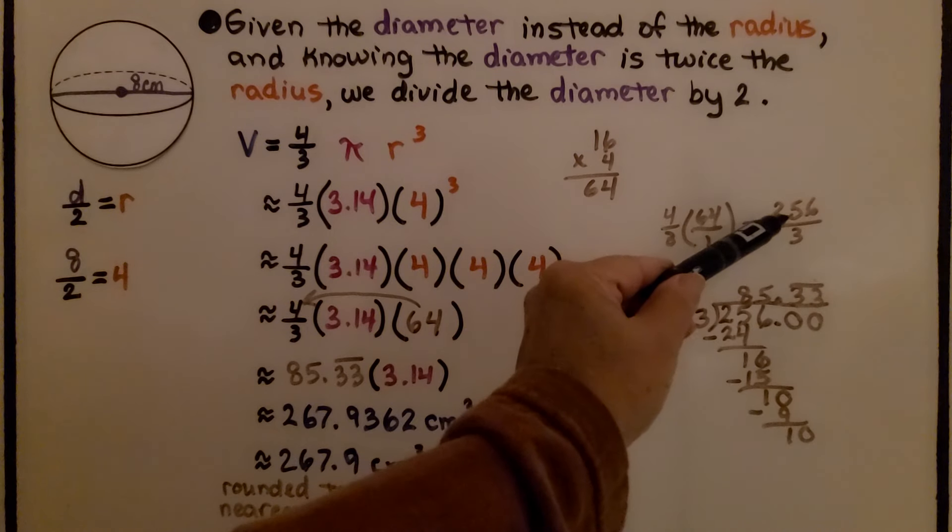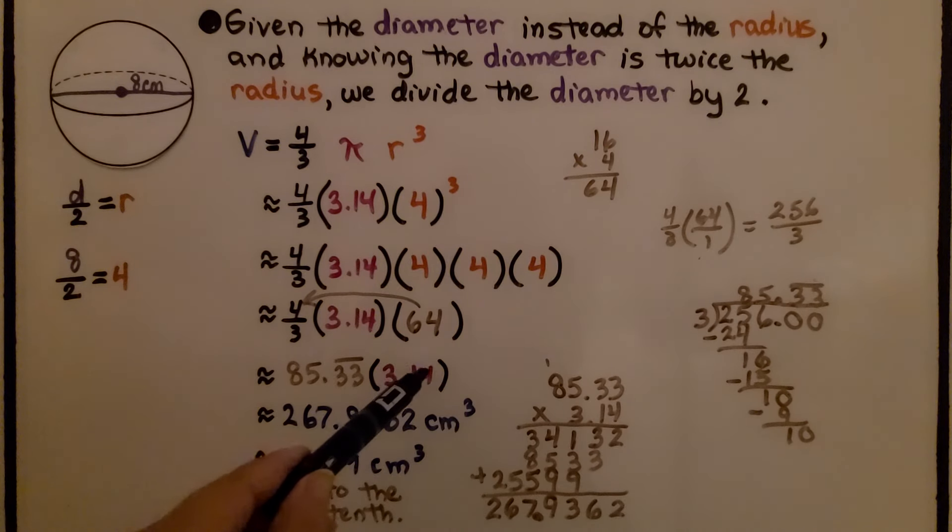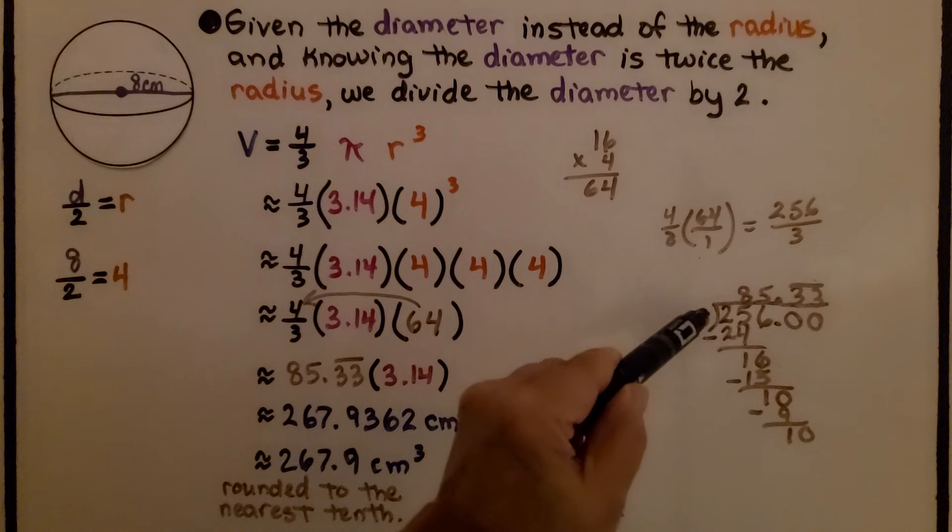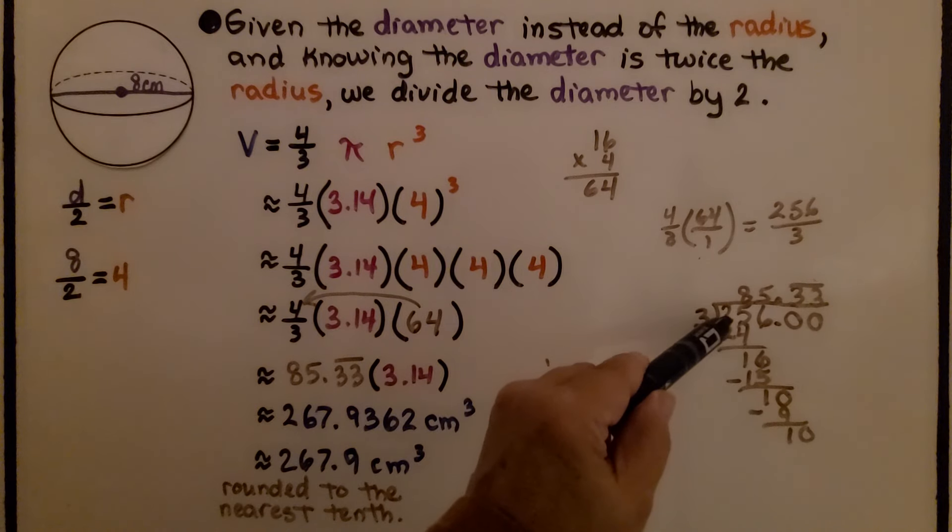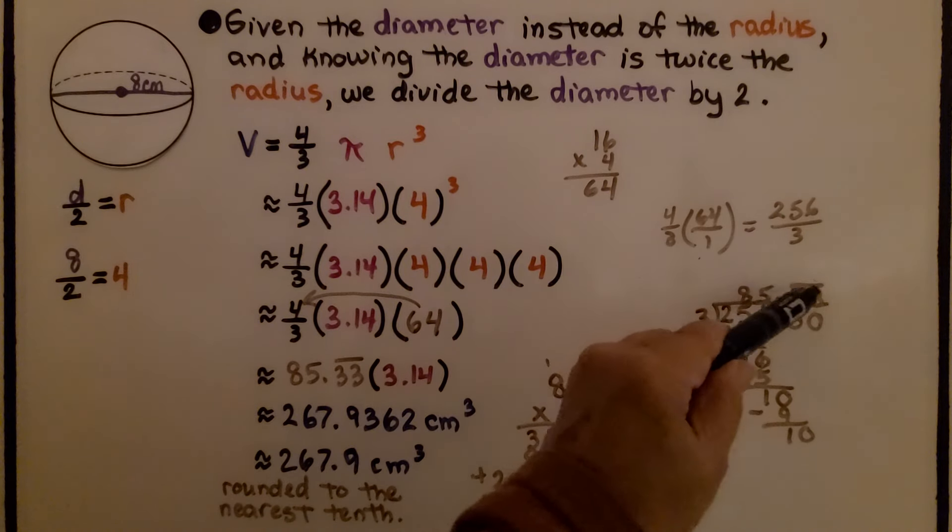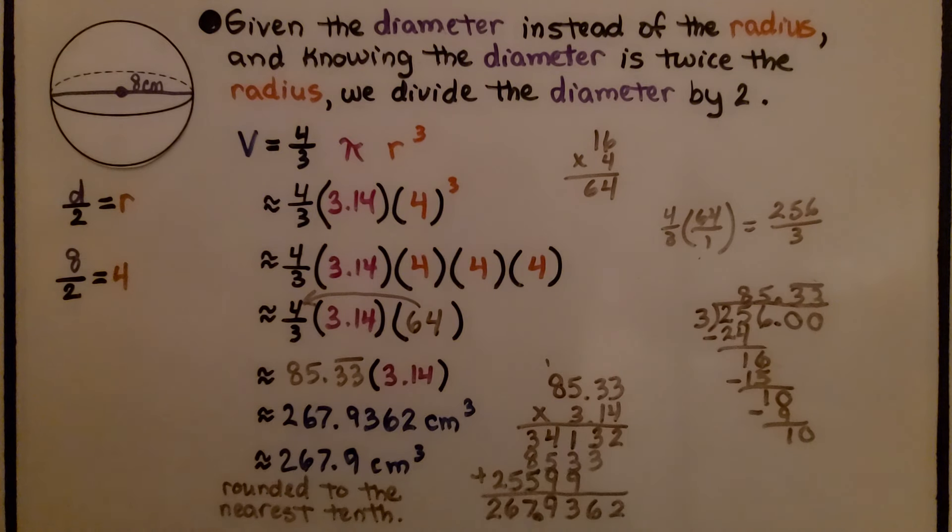Let's turn this into a decimal so we have them in the same format. We do 3 fits into 256, 85.33, and this 3 repeats, so I put a bar over the top. 85.33 times this 3.14 for pi. We multiply them together and we get 267.9362.